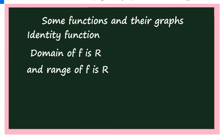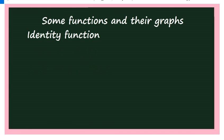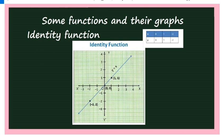Remember: the domain of the identity function is the set of real numbers, and the range of the identity function is also the set of real numbers. To draw the graph, you take two lines: one horizontal line called the x-axis, named x-O-x', and a vertical line named y-O-y'.